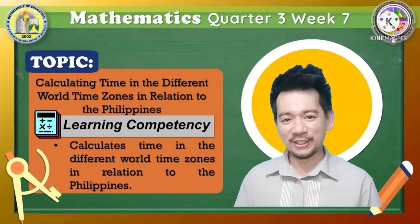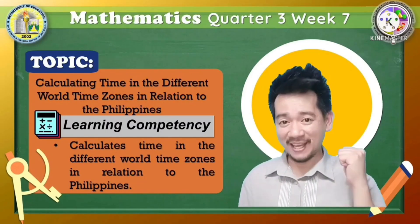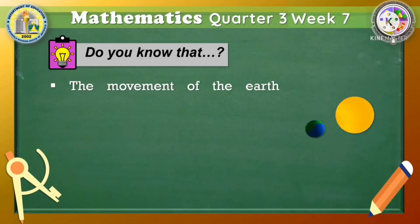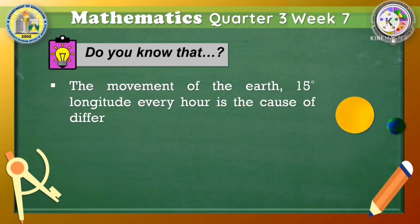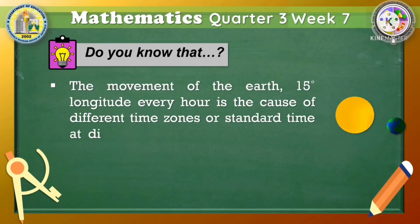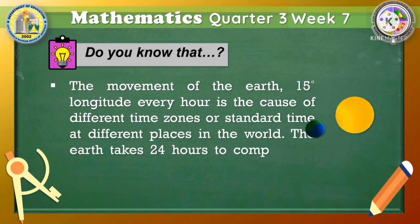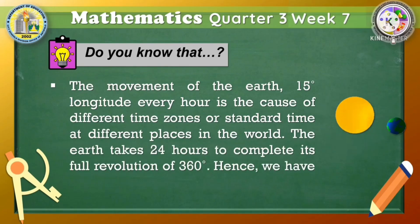Are you ready to learn? Let's begin! Do you know that the movement of the earth 15 degrees longitude every hour is the cause of different time zones, or standard time at different places in the world? The earth takes 24 hours to complete its full revolution of 360 degrees. Hence, we have 24 standard time zones.